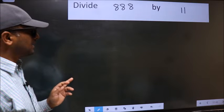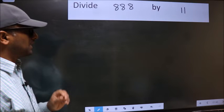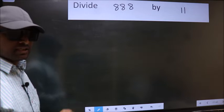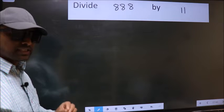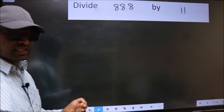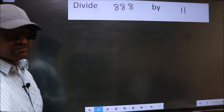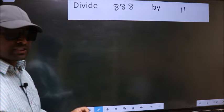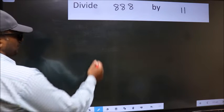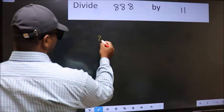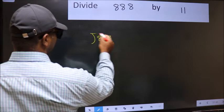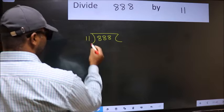Divide 888 by 11. While doing this division, many people make a mistake. I will let you know what that mistake is, but before that, we should frame it in this way: 888 divided by 11.